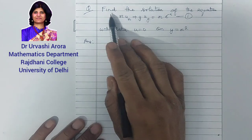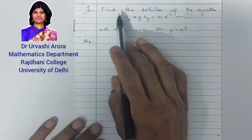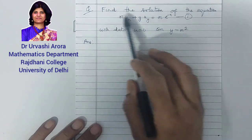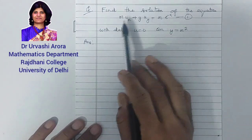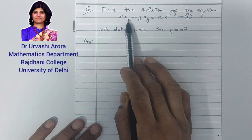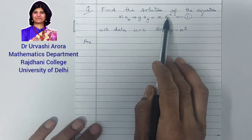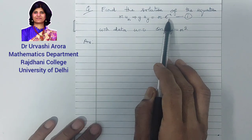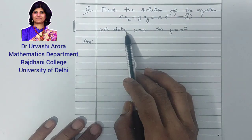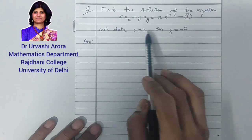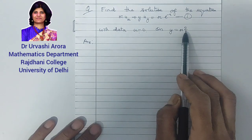What we are given is the question: find the solution of the equation x·u_x + y·u_y = x·e^(-u), with data u = 0 on y = x².